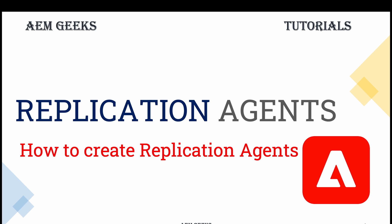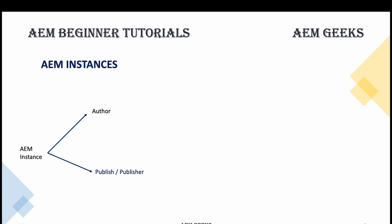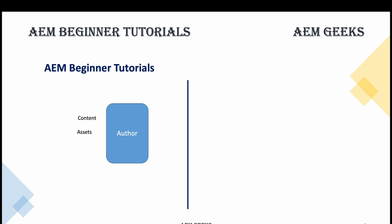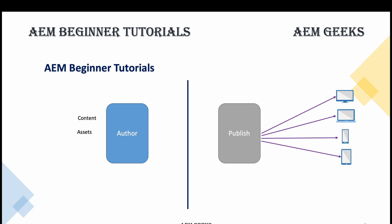In this tutorial I'll talk about replication agents. There are two instances in an AEM environment: author and publish. You always create content on author, whether it's pages or assets. There is another instance called publish which serves content to end users. So content created on author must also be present on publish. To move that content from author to publish, there is a process called replication — previously also called publish or activate.